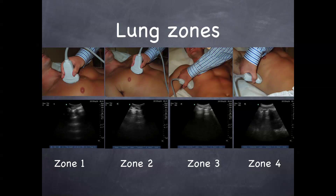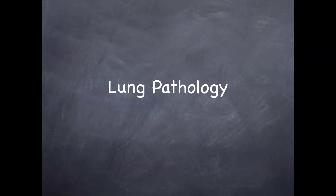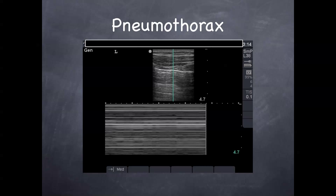Here are normal images of all four zones, and you can see where the probe is being held in each of these zones. Let's go over some abnormal — here are some pathologic images.